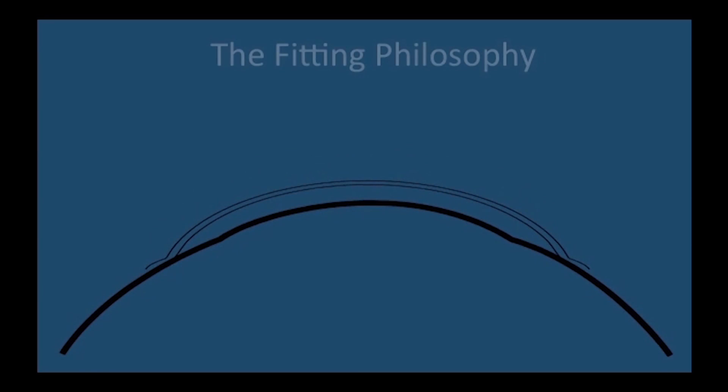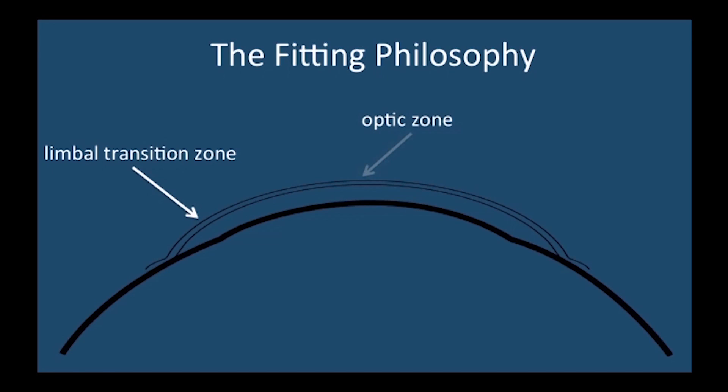Scleral lenses are unique in that they are designed to rest solely on the surrounding conjunctiva and underlying sclera. This means that they completely vault the cornea. The limbal transition zone of the lens is the portion that is between the optic zone of the lens and the scleral landing zone. It is this area that vaults over the limbus.